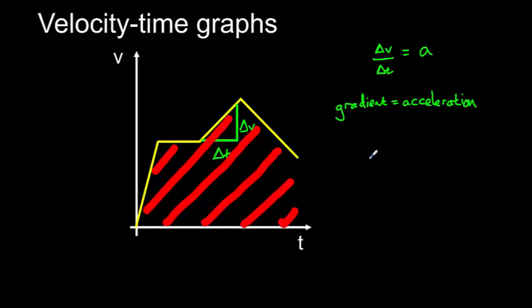So therefore, the area underneath the graph is equal to V times t. Now we know that velocity is equal to displacement divided by time.